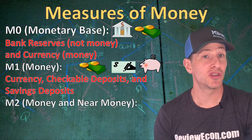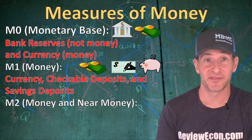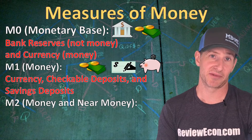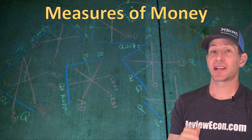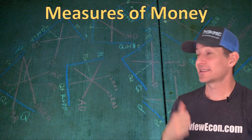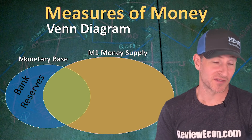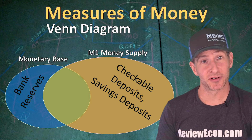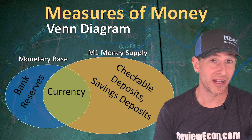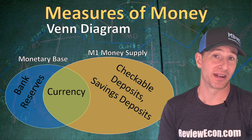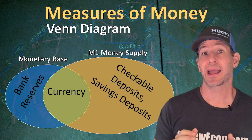We also have a broader measure of money: the M-2 money supply. It includes all of the money in M-1, plus some near money — money that is not immediately available as a medium of exchange but can be easily converted into one. M-2 includes all of M-1, small time deposits, and money market mutual funds. Looking at a Venn diagram: the monetary base has bank reserves not part of M-1; M-1 has checkable and savings deposits not part of the monetary base; and currency — paper and coin — sits in the middle, part of both. M-1 is then contained within M-2, which also includes small time deposits like certificates of deposit and money market mutual funds.